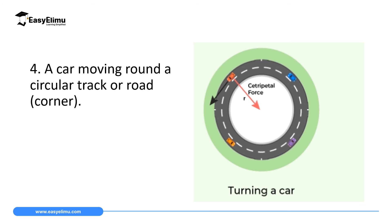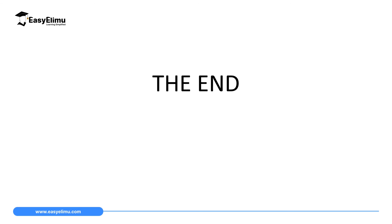Another case is a car moving around a circular track, road, or corner. As seen on the screen, a car is moving around a roundabout and there is a force pulling it towards the center — the traffic island. For the driver to maintain position on that road, they must reduce speed so that the centripetal force is reduced and the car maintains its position on the road.